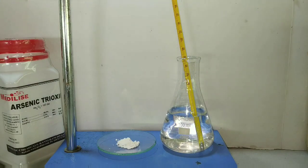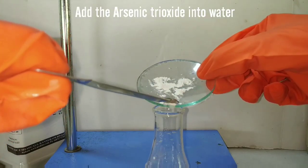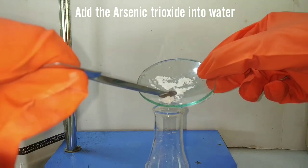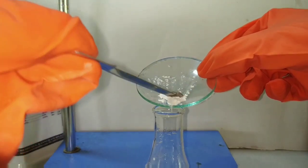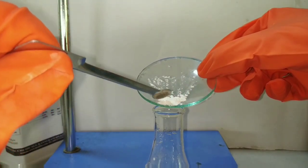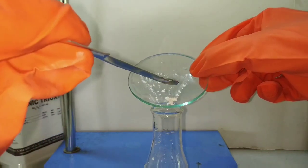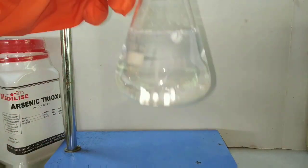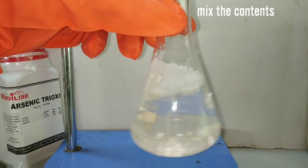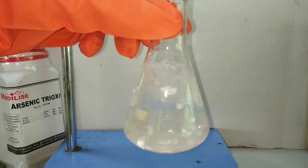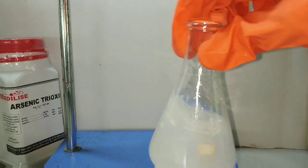I initially recorded the temperature which was around 24 degrees Celsius and now I am adding the arsenic trioxide into water. After adding the one gram of arsenic trioxide, I will mix the contents very well. You can see that even after mixing the contents, the arsenic trioxide is not dissolving in the water.